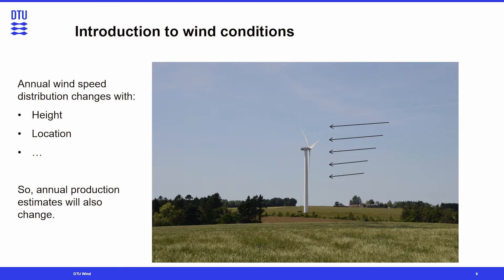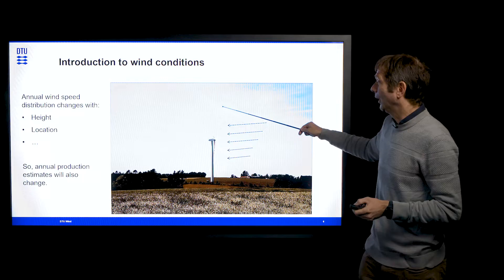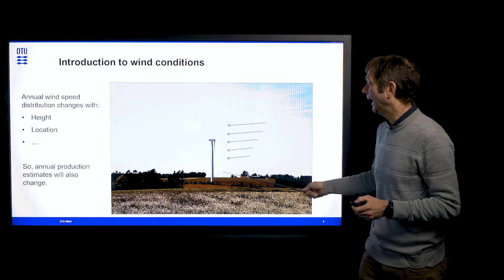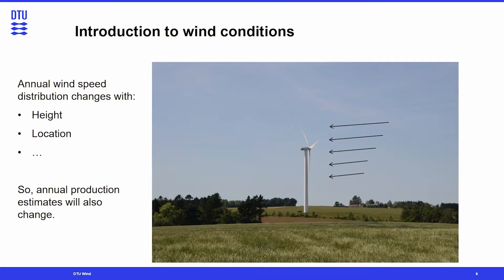The annual wind speed distribution changes with height and with location. For example, if we change the hub height with a bigger tower, there will be a different wind speed distribution. And if we move the tower to a different location in the landscape, there will also be a different wind speed distribution. These things together will also mean a change to the annual production estimates.